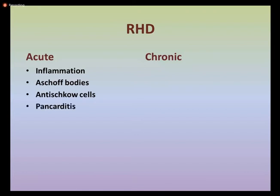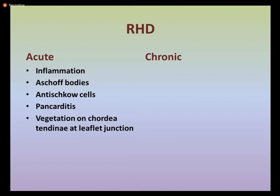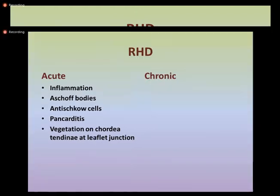There is presence of pancarditis, and further there are formations of vegetations on the chordae tendineae at the leaflet junctions. Vegetations are small masses of platelet, fibrin, and micro-colonies of microorganisms along with inflammatory cells formed on the chordae tendineae. The chordae tendineae are tendinous strands present in the heart which play a role in holding the atrioventricular valves.